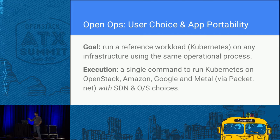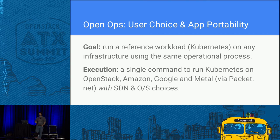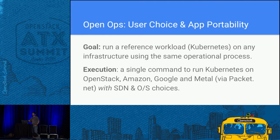Our goal was to run a reference workload. We're doing a lot with Kubernetes right now because we think it's interesting and there's a really strong community forming around it. We want to be able to run Kubernetes on any infrastructure with the same operational process — getting out of the idea that it matters whether I run on Google, Amazon, OpenStack, bare metal, or Packet. The real operational concerns are: is it scalable, upgradeable, and secure?